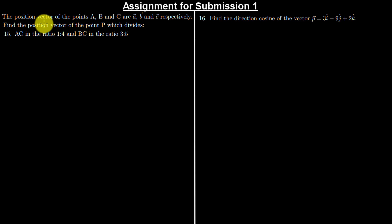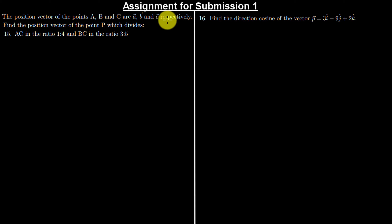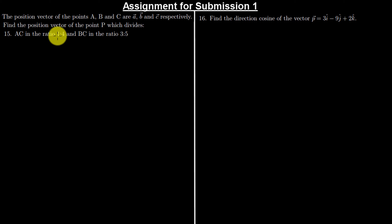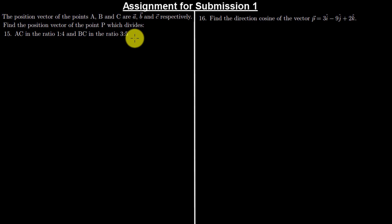In this question, the position vectors of points A, B and C are given as A, B and C respectively. Find the position vector of point P which divides AC in ratio 1 to 4 and BC in ratio 3 to 5.